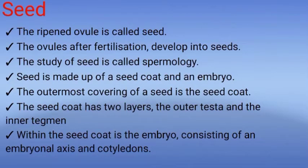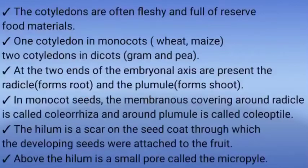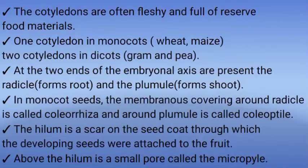Within the seed coat, the seed contains an embryo. The embryo consists of an embryonal axis and cotyledons. Cotyledons are often fleshy and full of reserve food material. One cotyledon is present in monocotyledonous plants — examples: wheat and maize.